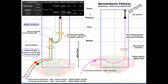The next concept is the three-neuron system. The DCML pathway was a three-neuron system, and so is this one. We have a first-order neuron, a second-order neuron, and then a third-order neuron. The first-order neuron synapses with the second-order neuron, which then synapses with the third-order neuron to bring information ultimately up to the cortex.